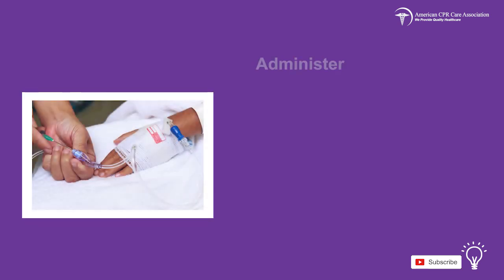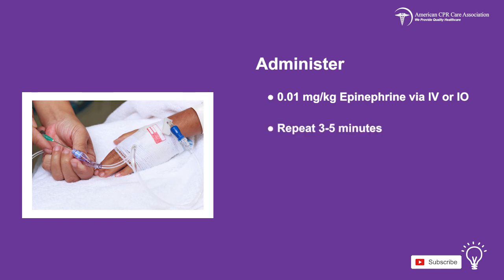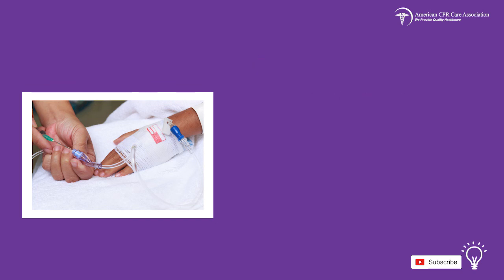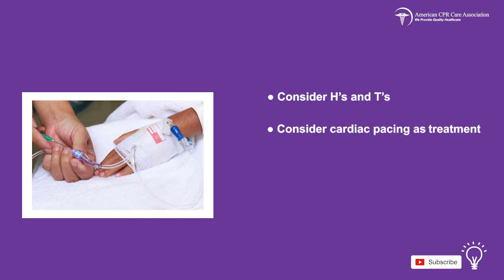After one cycle of CPR, administer the following medications: Epinephrine via IV or IO access at 0.01 mg per kg, repeated every 3–5 minutes, and Atropine at a dose of 0.02 mg per kg if there is increased vagal tone or primary AV block. Continue the process until the child's rhythm is back to normal. Consider the H's and T's — 10 reversible conditions that may have affected the child — and consider cardiac pacing as treatment.